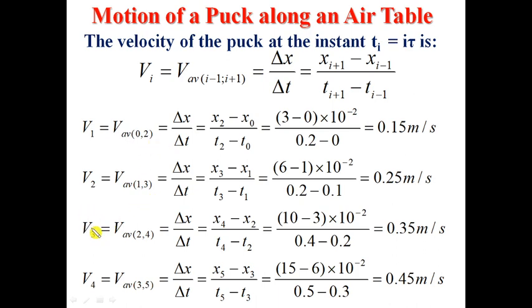Last one, V3. To calculate the velocity at dot M3, the velocity at dot M3 is equal to the average between before M2 and after M4. Therefore, it will be X4 minus X2 over T4 minus T2. X4 and X2 from the table: 10 minus 3. Now we multiply by 10 power negative 2 to convert from centimeters into meters. And time T4: 0.4 minus 0.2 equals 0.35 meters per second. And so on.